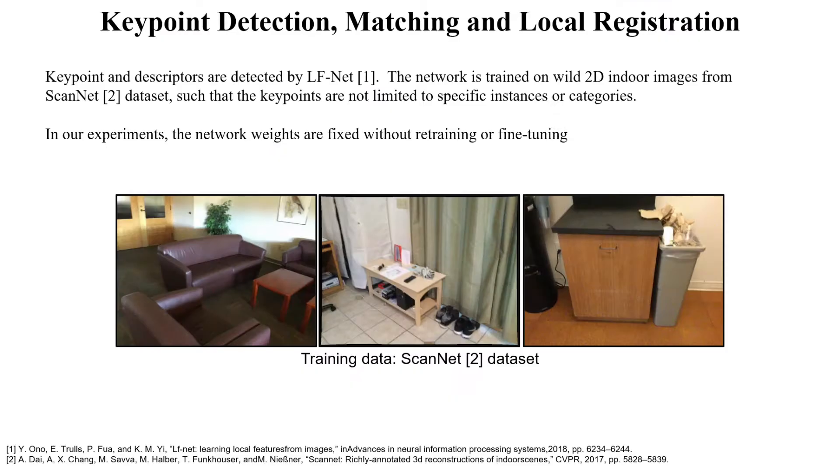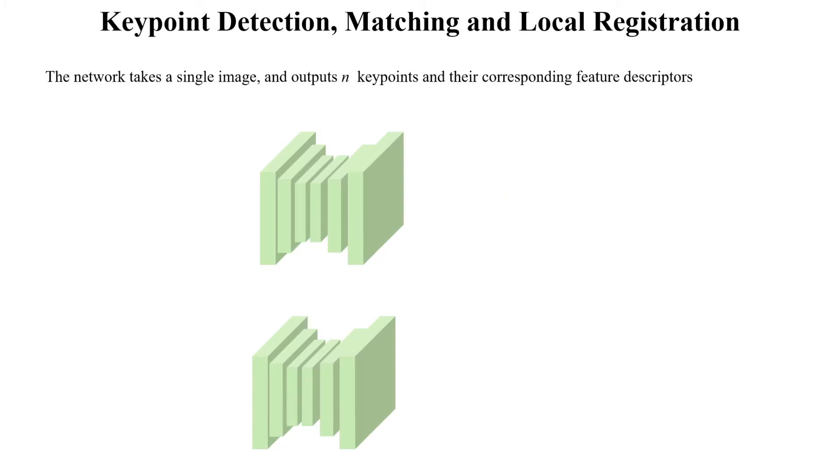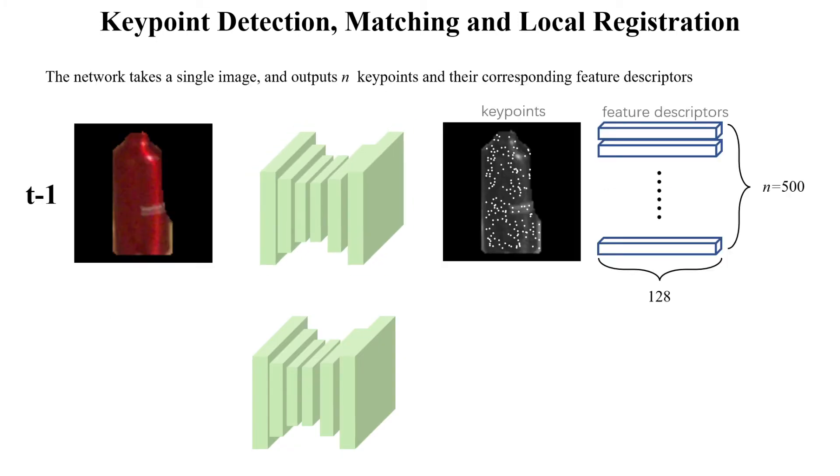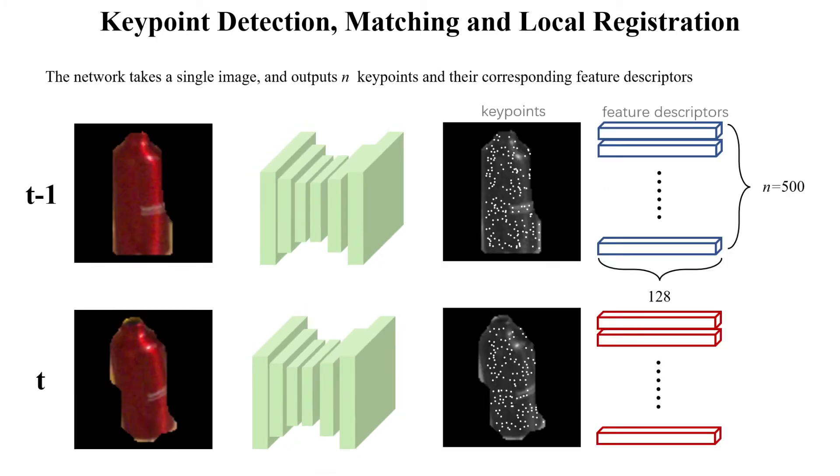Keypoints and descriptors are detected by LF-Net. The network is trained on wild 2D indoor images from ScanNet dataset, such that the keypoints are not limited to specific instances or categories. In all our experiments, these pre-trained network weights are fixed without retraining or fine-tuning. The network takes a single image and outputs n keypoints and their corresponding feature descriptors.